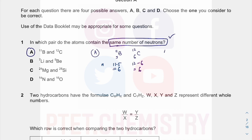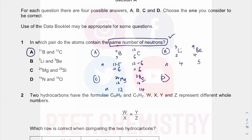Let me quickly work out the rest, because you will be expected to work through them in a theory paper. Number of neutrons: 7 minus 3 is 4, 9 minus 4 is 5. Then 24 magnesium is element 12 and silicon is element 14: 24 minus 12 is 12, 28 minus 14 is 14. For nitrogen and oxygen: element 7 and element 6 — 14 minus 7 is 7, 16 minus 6 is 10. Clearly A is the only correct answer.